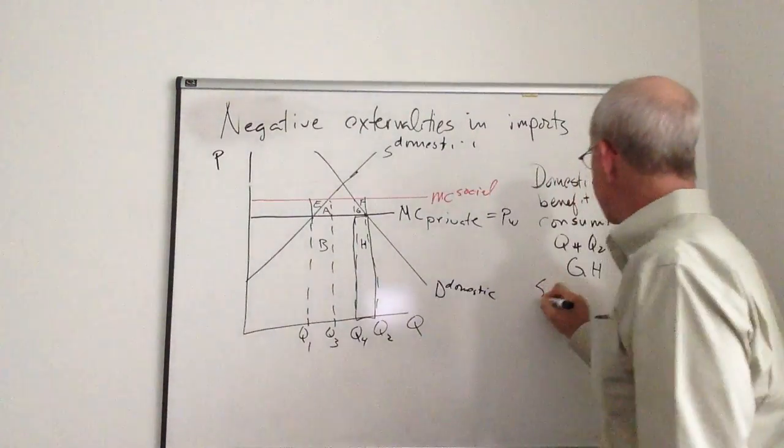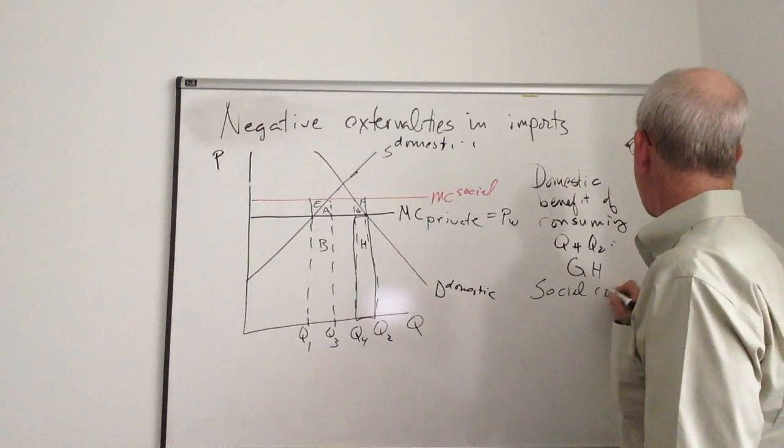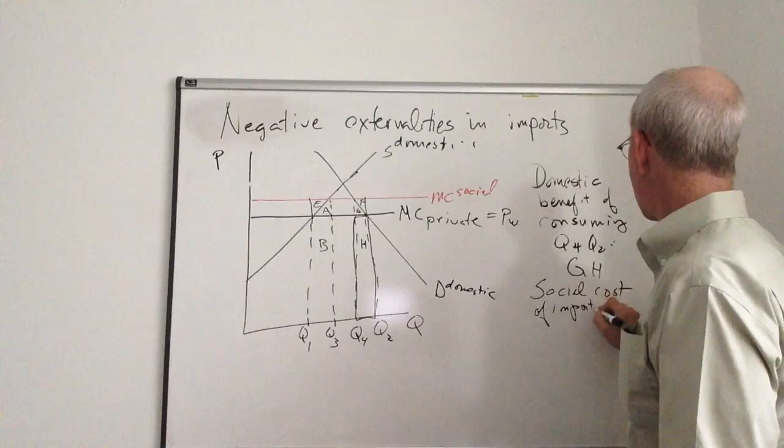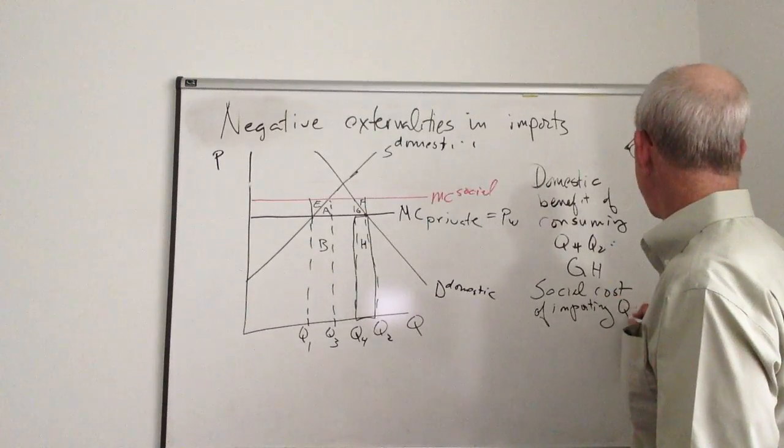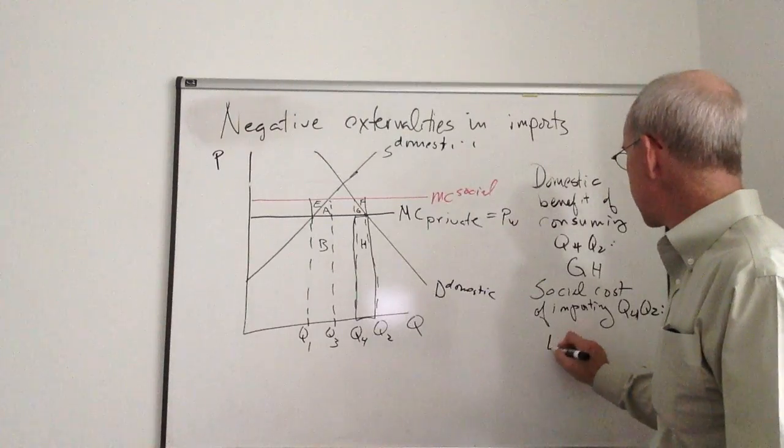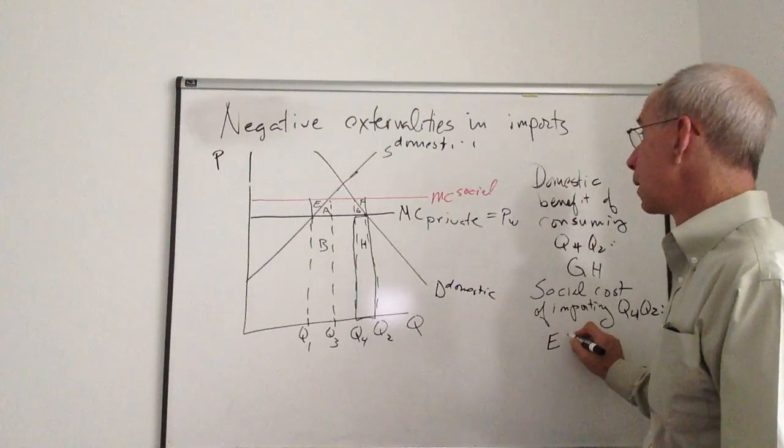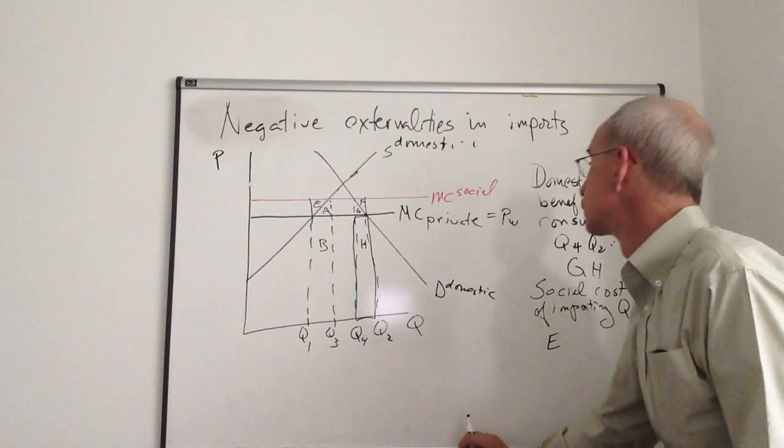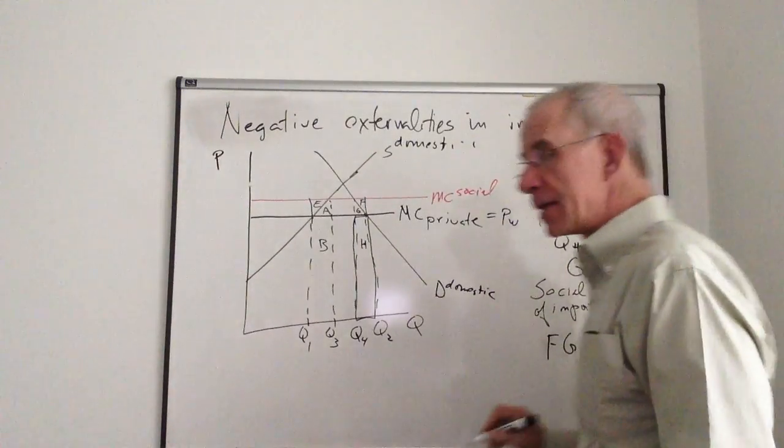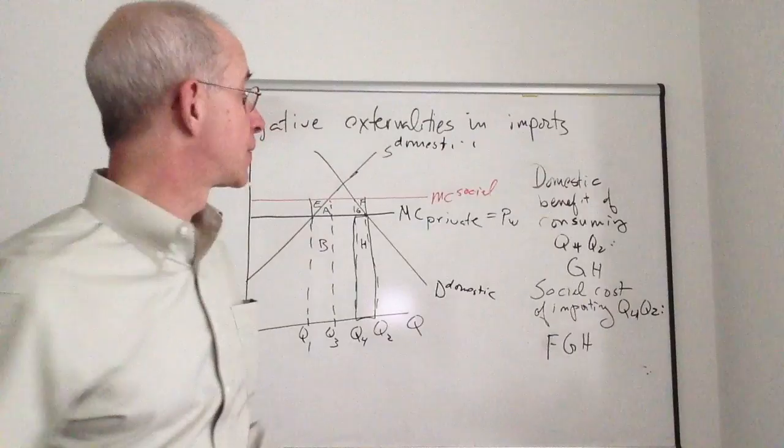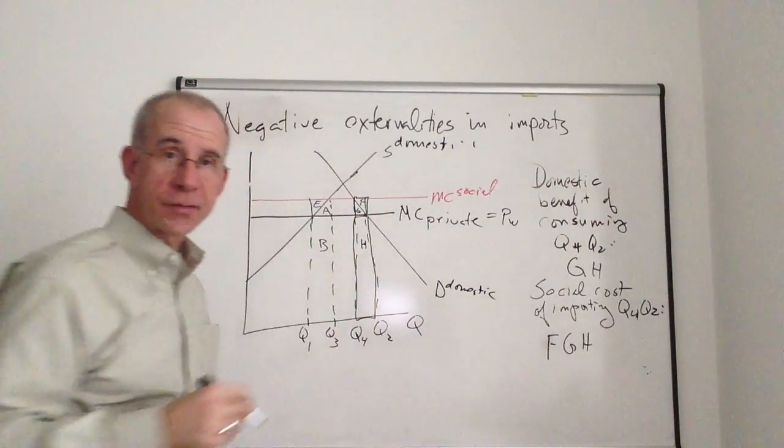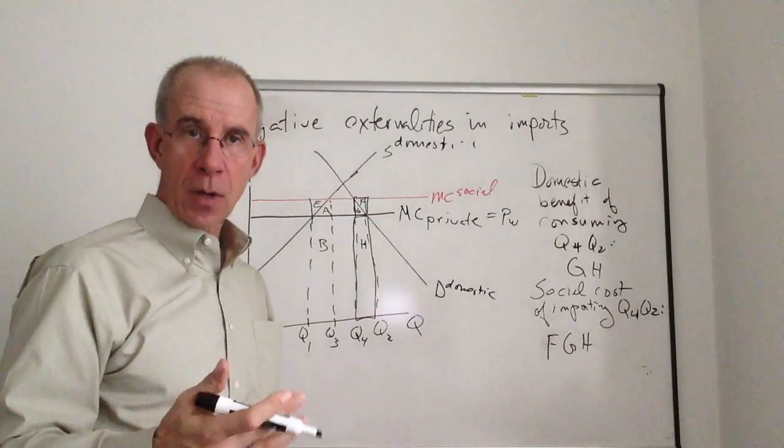The social cost of importing Q4 to Q2 is F, G, H. It's the private cost plus this area, F plus G. So these are the costs of importing this product, inclusive of these social consequences.